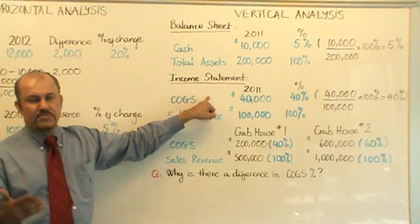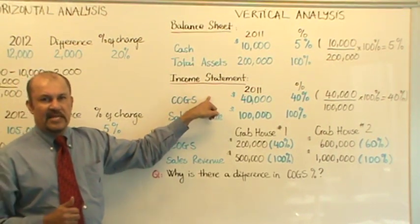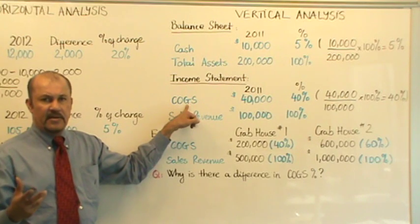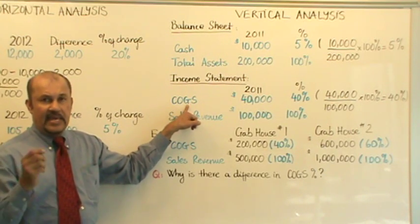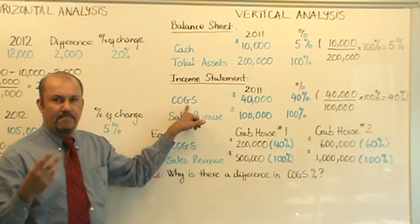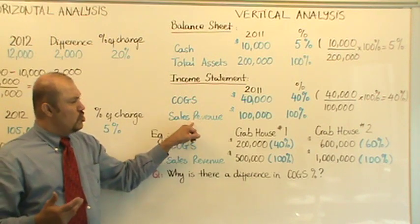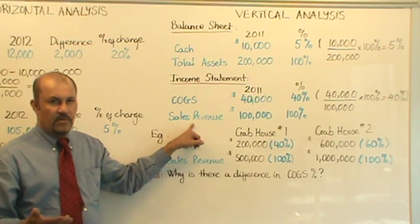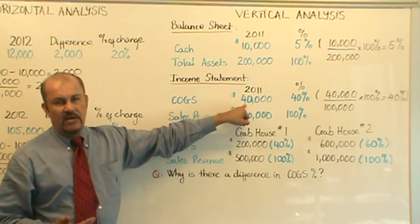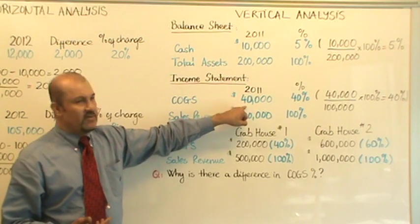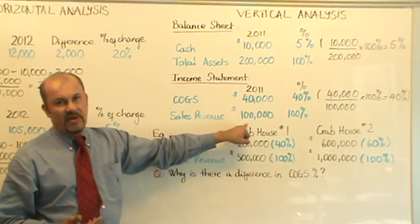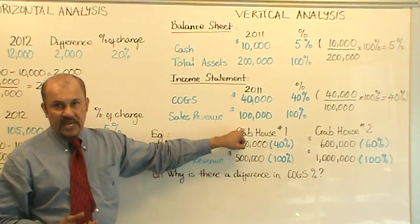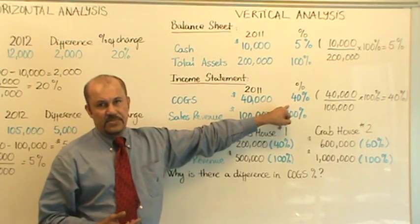Next, let's look at an income statement item to illustrate the vertical analysis. I have selected cost of goods sold as the item here. Like the balance sheet, we need a base account. On the income statement, your base account tends to be sales or sales revenue. In this example, we have cost of goods sold in 2011 of $40,000 and sales revenue of $100,000. So $40,000 expressed as a percentage of sales revenue would be 40%.